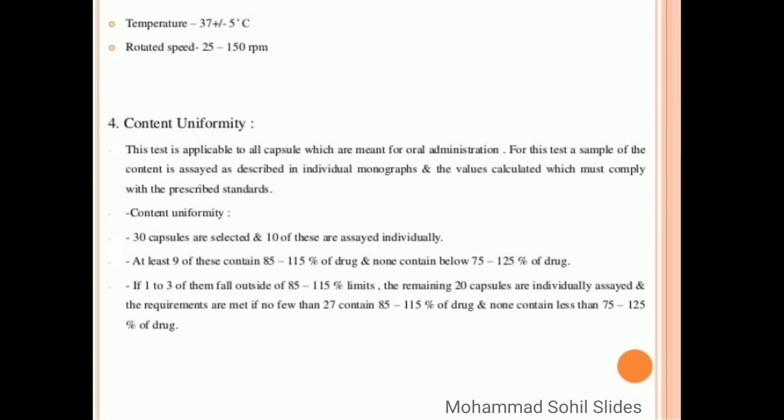If 1 to 3 of them fall outside of 85 to 115% limits, the remaining 20 capsules are individually assayed and the requirements are met if no fewer than 27 contain 85 to 115% of drug and none contain less than 75 to 125% of drug.